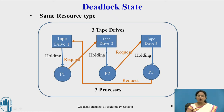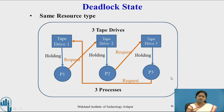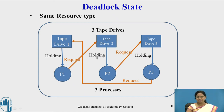P1 is requesting tape drive 2 which is already held by P2. P2 is requesting tape drive 3 which is already held by P3. P3 is requesting tape drive 1 which is already held by P1. All three processes will enter the waiting state and will never release the resources they hold. This situation is called a deadlock — all processes P1, P2, and P3 are in the waiting state.